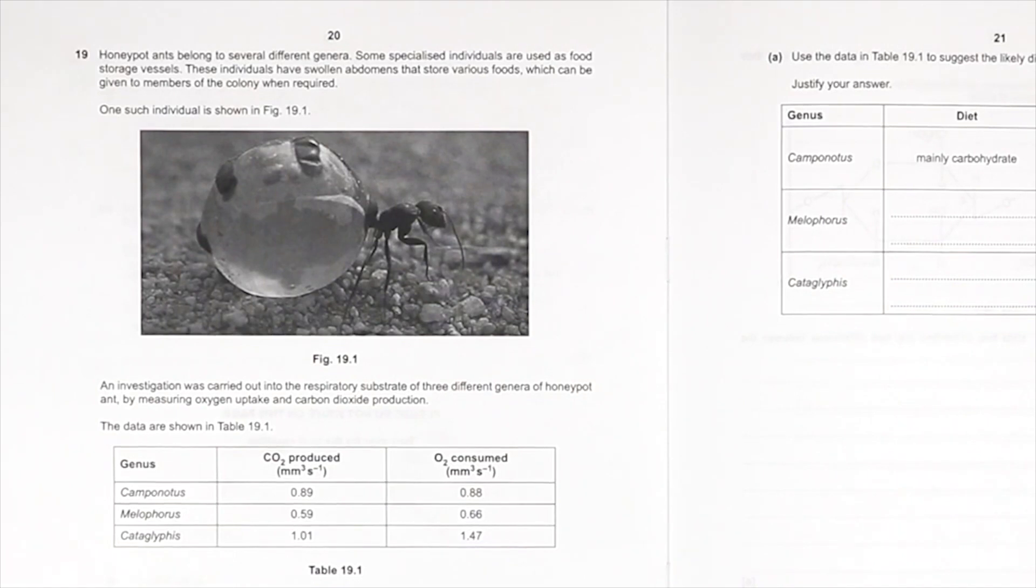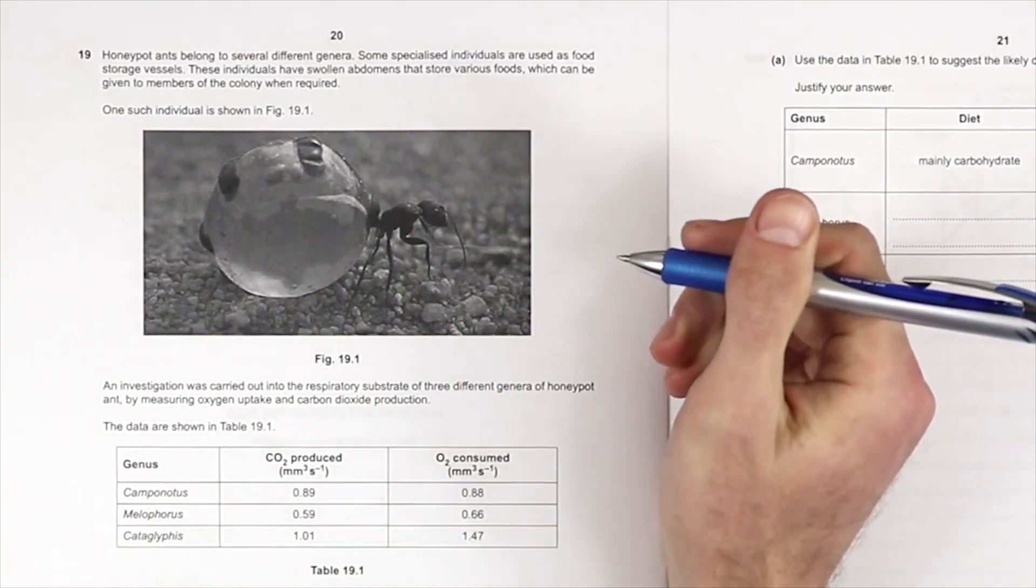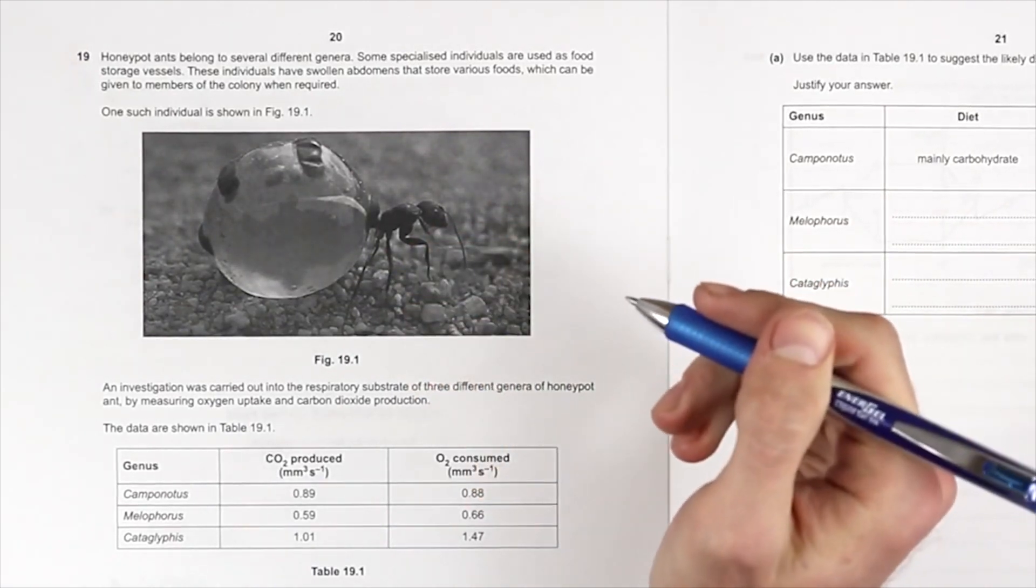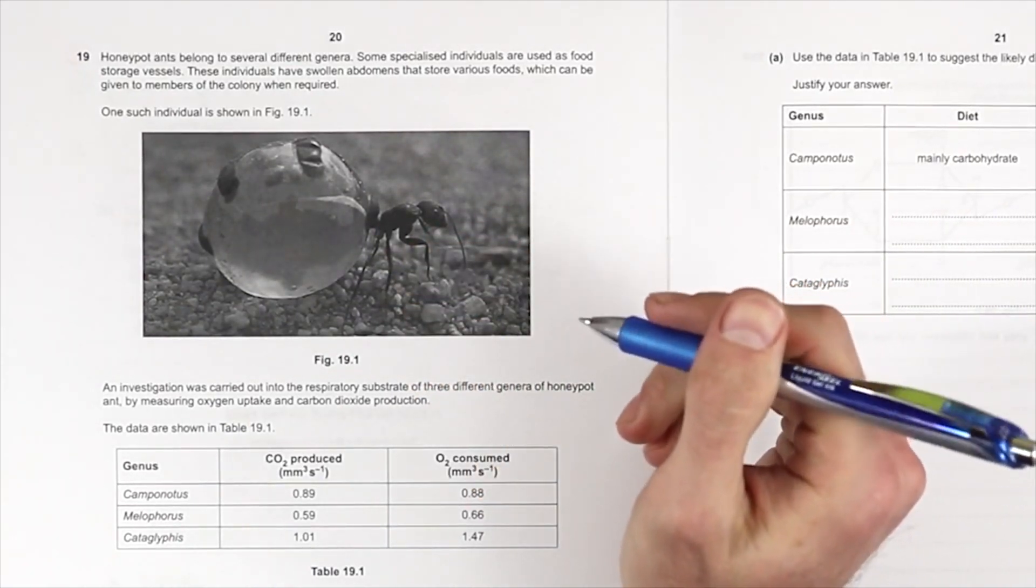These individuals have swollen abdomens that store various foods which can be given to members of the colony when required. It must be pretty heavy. One such individual is shown in figure 19.1.